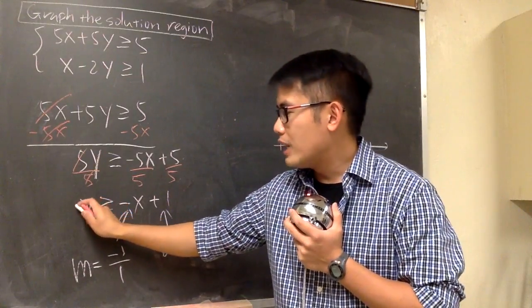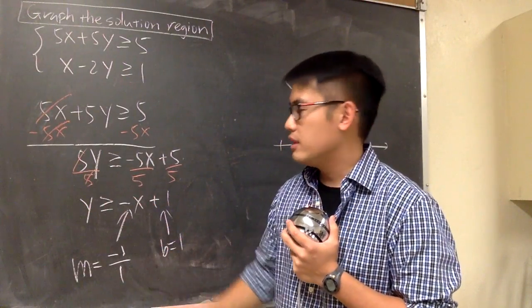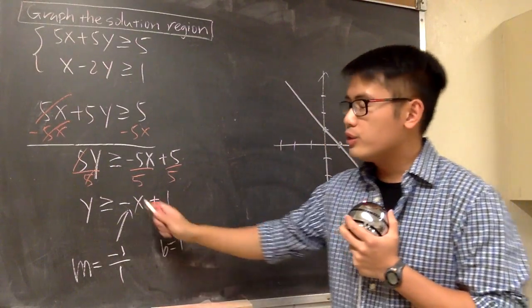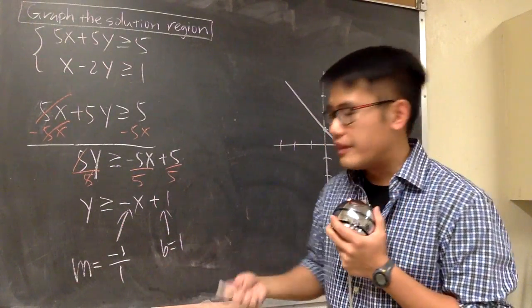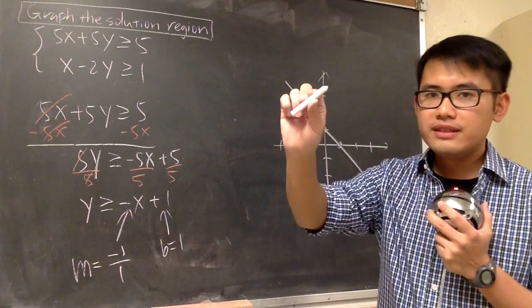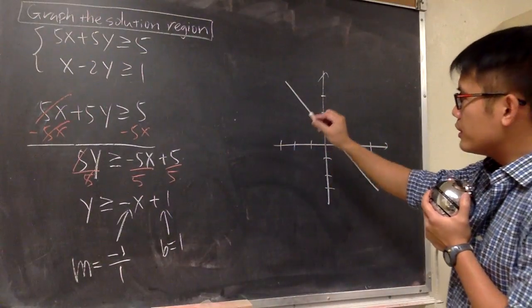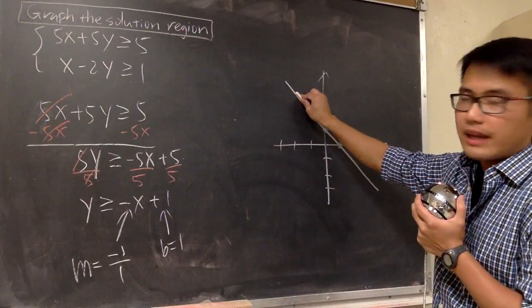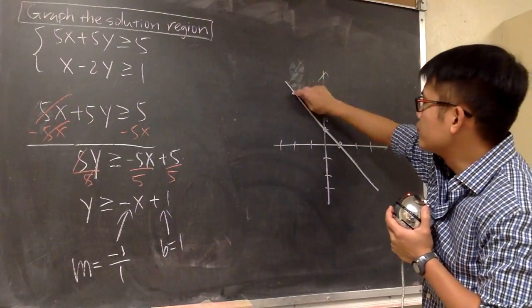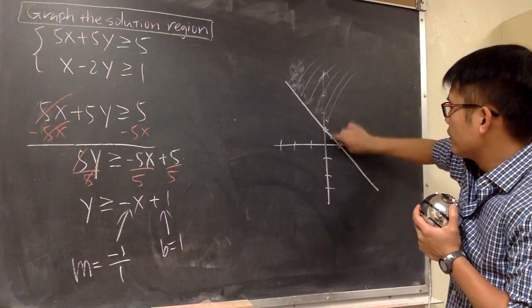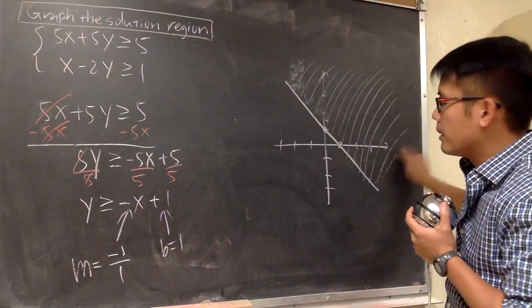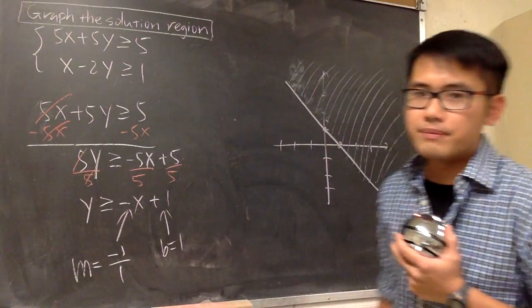Whenever we have y being greater than - this is greater than or equal to, but it's greater than - we are going to shade upward. Now imagine you are painting your house and this is your brush. What you are going to do is put the brush on the line and you are going to go up like this. So that's the idea. This is the region that we are talking about from this inequality.